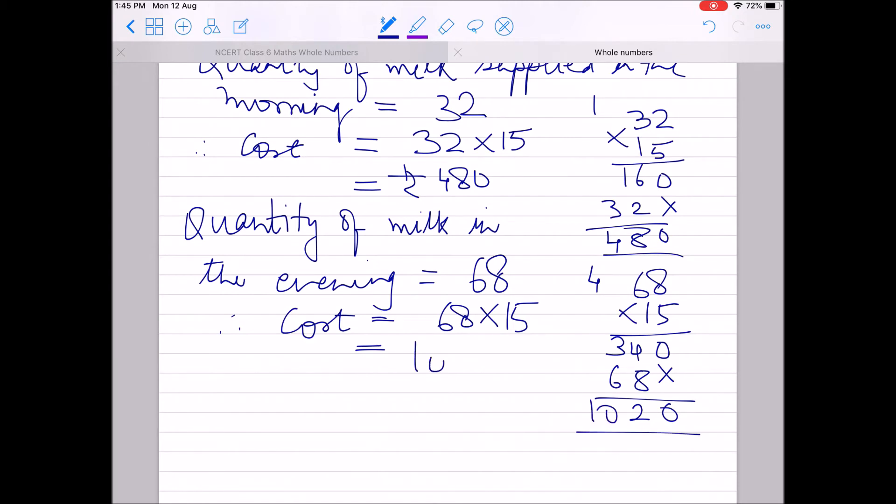Similarly, the evening quantity is 68 liters, so cost is 68 into 15 which equals 1020. So the total money due to the vendor, the total cost, will be the morning cost plus the evening cost: 1020 plus 480 equals 1500 rupees.